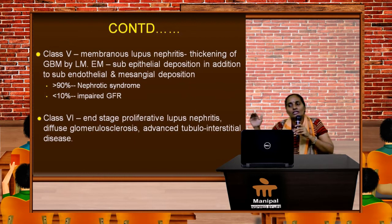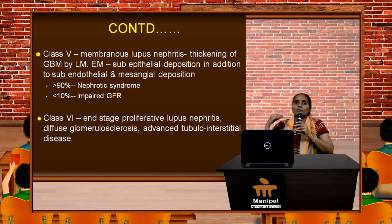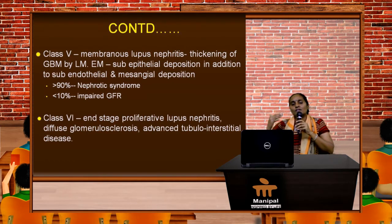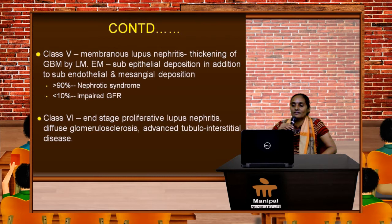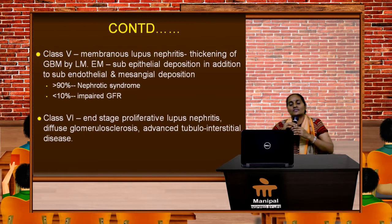Class 5 is membranous lupus nephritis with GBM thickening seen clearly by light microscopy; electron microscopy shows sub-epithelial deposition in addition to sub-endothelial and mesangial deposition. More than 90% of Class 5 patients present with nephrotic syndrome, and less than 10% already have impaired GFR at presentation. Class 6 is end-stage proliferative lupus nephritis with diffuse glomerular sclerosis and advanced tubular interstitial disease.